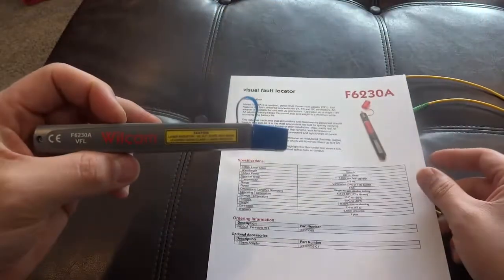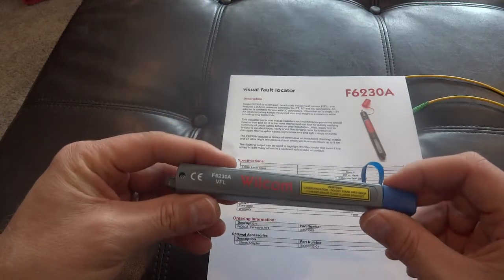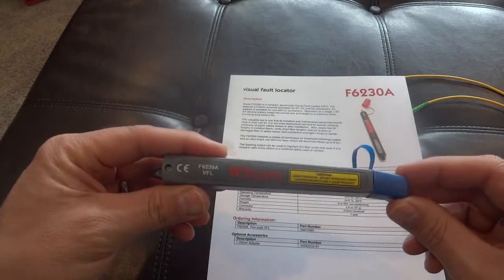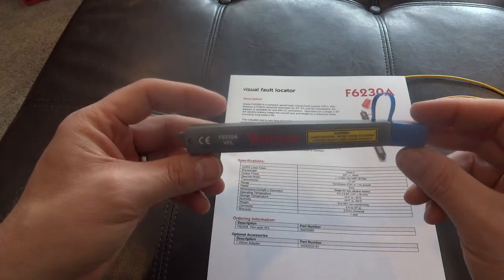The purpose of a VFL is to identify that you've got light continuity, that light will travel down a path to another spot. This is what the device looks like.